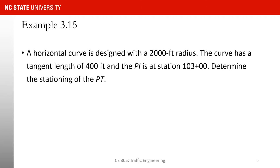Here is the example we are going to go through today. We have a horizontal curve designed with a radius of 2,000 feet. The curve has a tangent length of 400 feet. The PI is at station 103+00, and we need to determine the station of PT. When you see an example like this, always start by drawing the curve and putting the information on it — things become much easier that way. I'd like you to pause the video, draw this curve, solve the problem, then resume and see my solution.